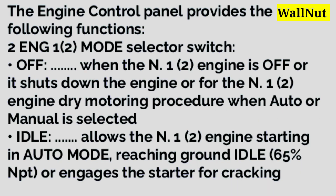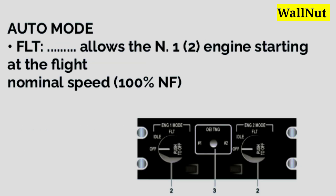The functions of the engine control panel. Idle — the first position is off. When the N1 engine is off, it shuts down the engine, or for the N1 engine dry motoring procedure when auto or manual is selected. Idle position allows the N1 engine starting in auto mode, reaching around idle 65% NPT, or engages the starter for cranking. Auto mode allows the N1 engine starting at the flight nominal speed of 100% NF.